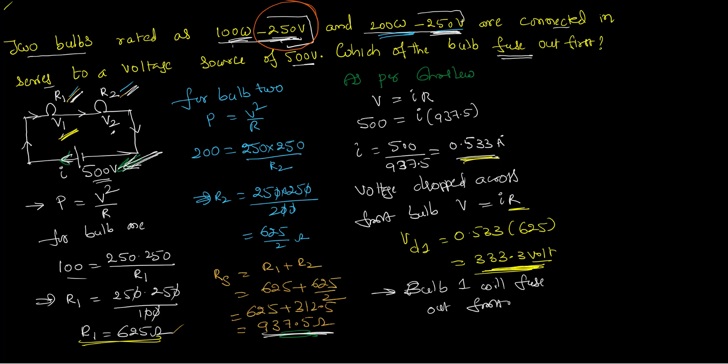Anyway, just for the confirmation sake I can calculate the voltage drop across the second bulb also. Voltage drop at second bulb, V drop 2 is equal to I into R2. I is 0.533, resistance is 625 by 2. So it's obviously half of this because by 2 is only extra, so the value is 166.56 volts approximately.